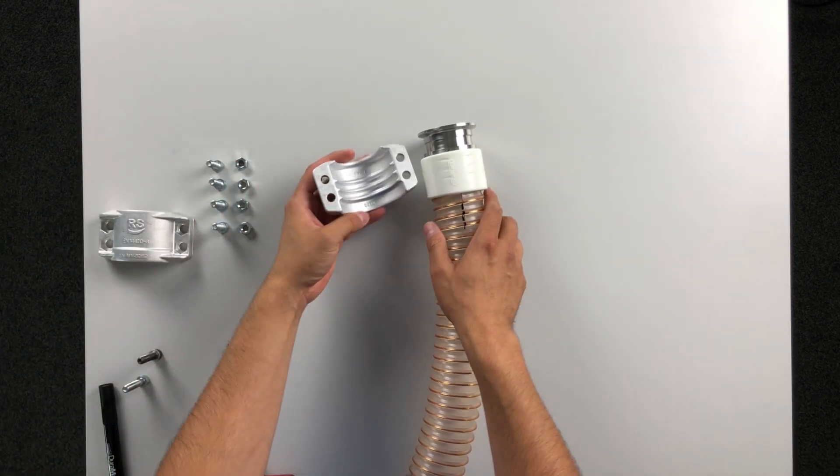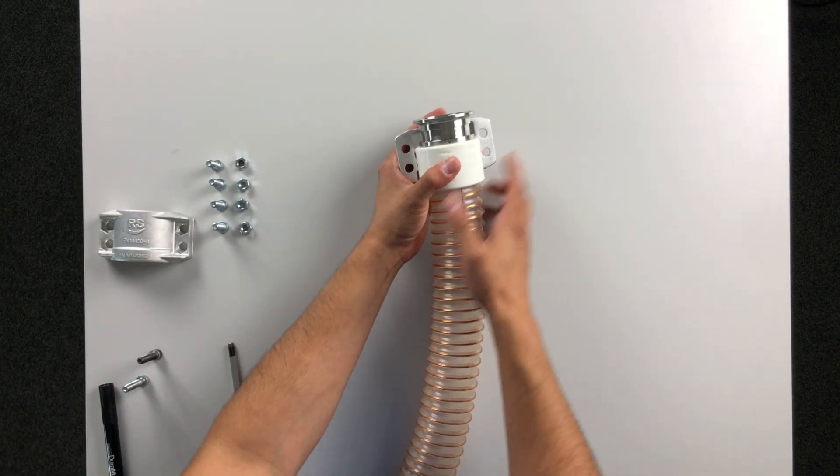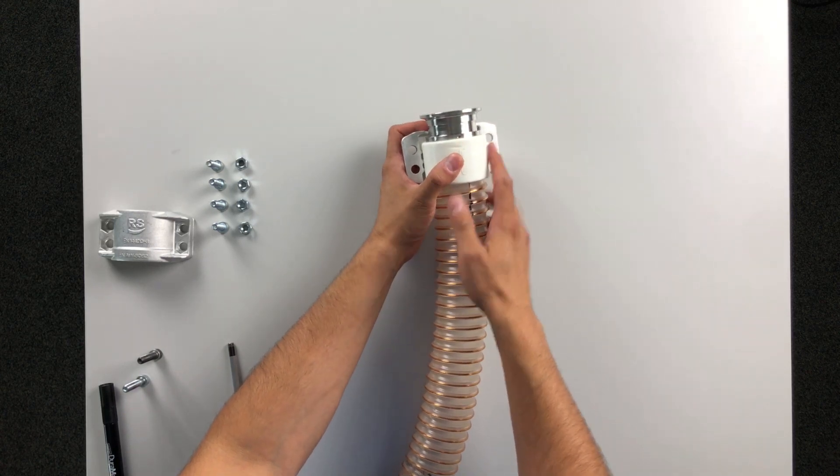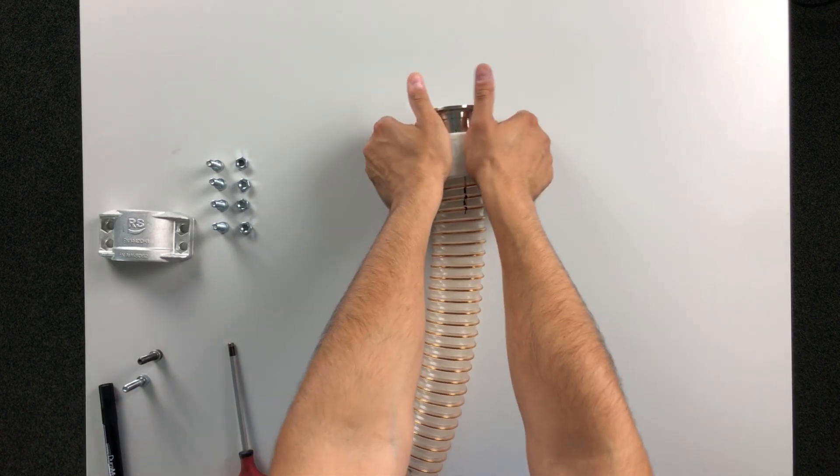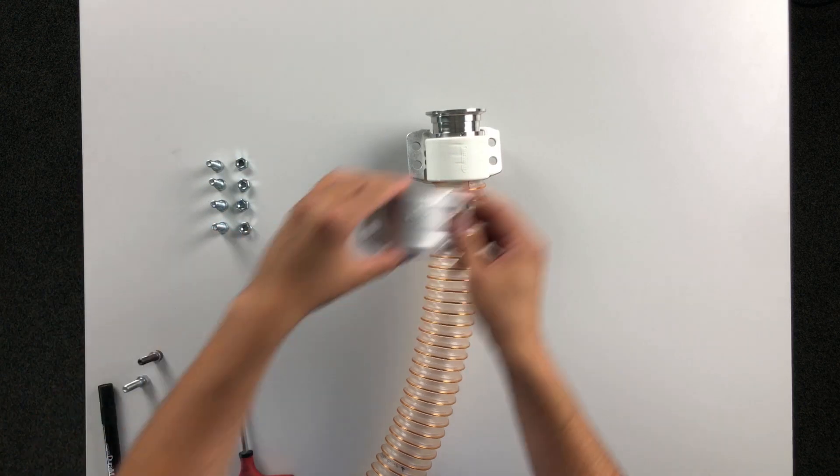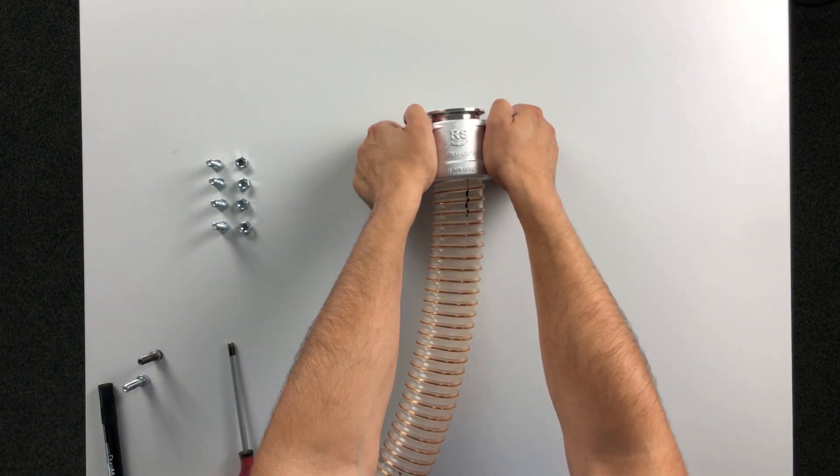Now we can put the first clamping shell in place. The collar of the clamping shell must engage in the safety collar of the nozzle. The second clamping shell can be fitted now.